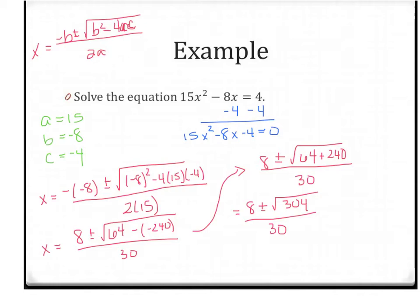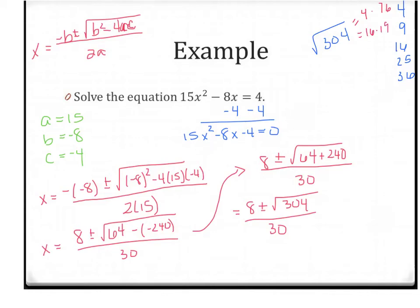Now you really want to break down the radicals. We're looking at the square root of 304, and you want to ask yourself what perfect square number goes into that. Your perfect square numbers are 4, 9, 16, 25, and so on. 304 can be 4 times 76. 9 doesn't go into it evenly. 16 times 19. 25 isn't going to go into it. 36 doesn't go into it. So we're going to use 16 times 19. The square root of 16 times 19 is the square root of 16 times the square root of 19, which is 4 square root of 19.